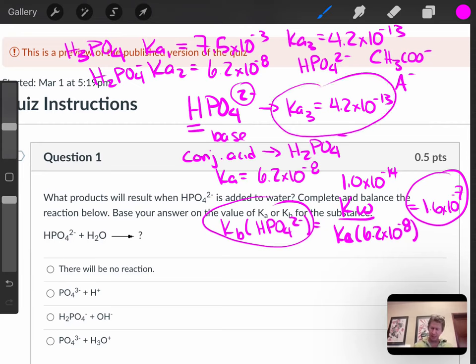So that's the Kb for our substance. Here's the Ka for our substance, because this substance can be an acid or a base. And the Kb is larger than the Ka for the same thing. So that means it's going to be a base.